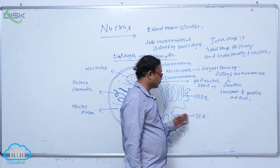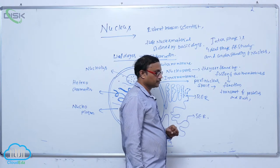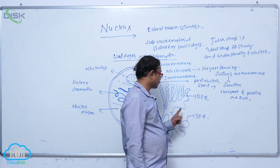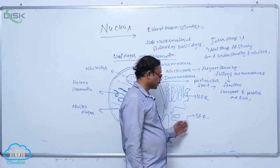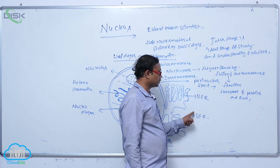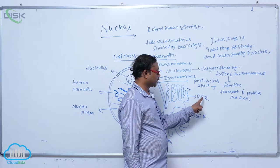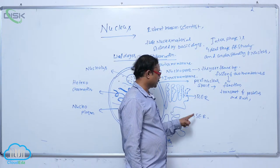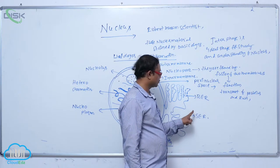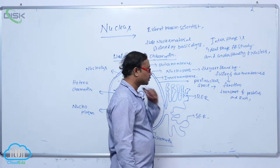The endoplasmic reticulum is of two types: endoplasmic reticulum that has ribosomes is known as RER (rough endoplasmic reticulum), and endoplasmic reticulum that does not have ribosomes is known as SER (smooth endoplasmic reticulum).